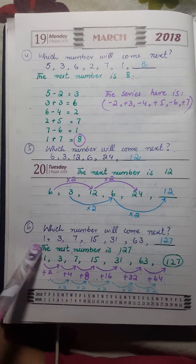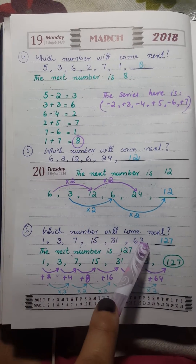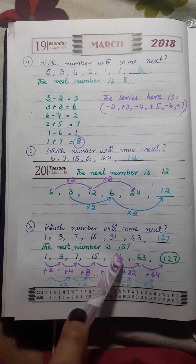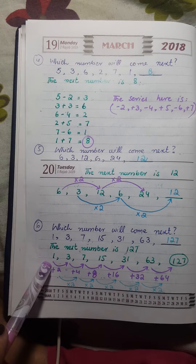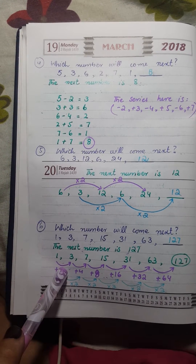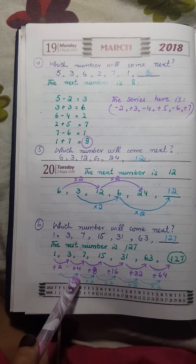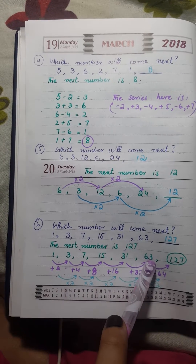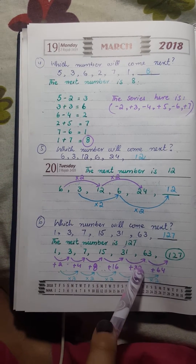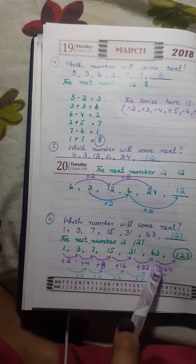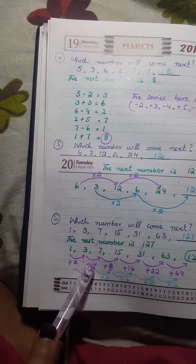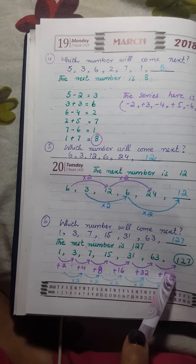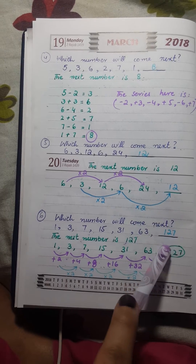Which number will come next in 1, 3, 7, 15, 31, 63? The answer is 127. Let us see the differences: 1 + 2 = 3, 3 + 4 = 7, 7 + 8 = 15, 15 + 16 = 31, 31 + 32 = 63, and 63 + 64 = 127. The differences are 2, 4, 8, 16, 32, 64 — all powers of 2, doubling each time. So we add 64 to 63 to get 127.